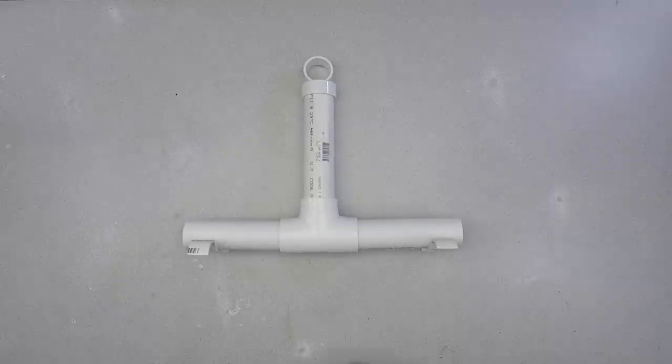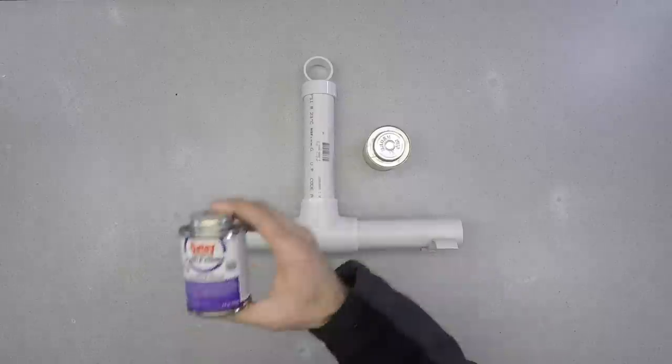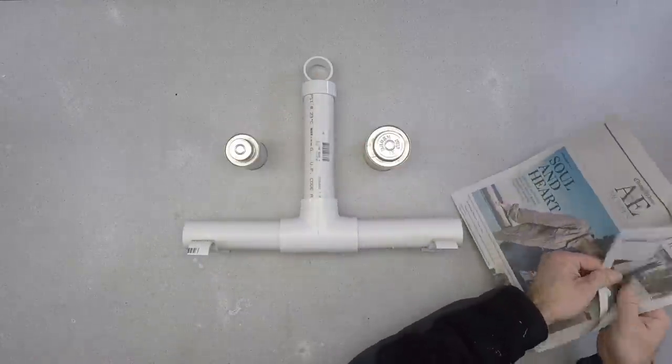I'll use standard PVC primer and adhesive to seal all three joints on the T-connector. Don't accidentally seal off the cap if you plan to reload your bait station.